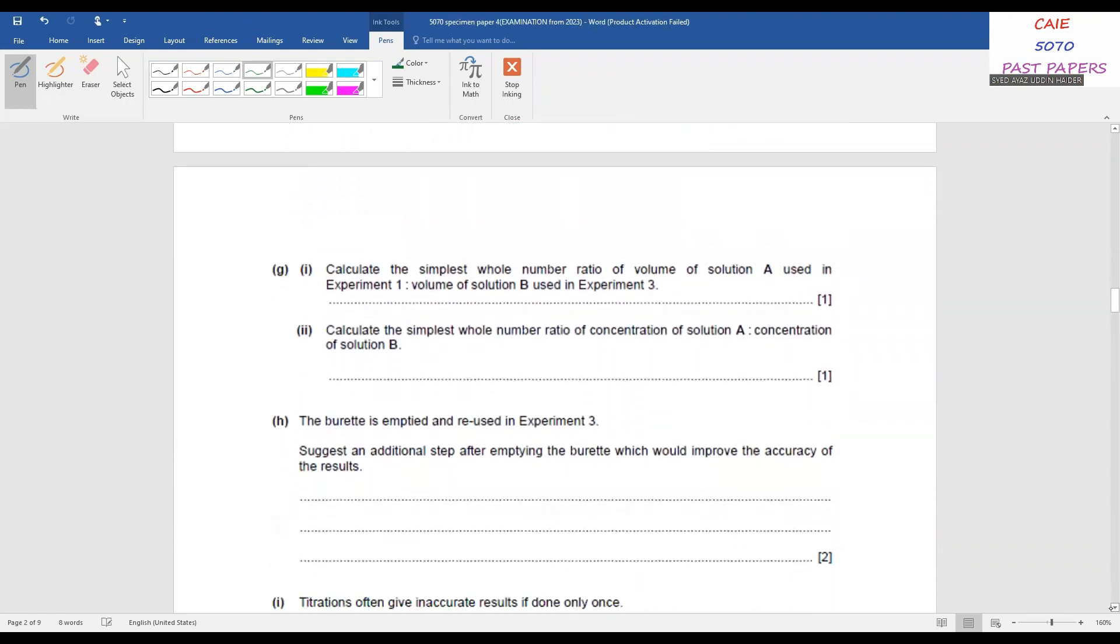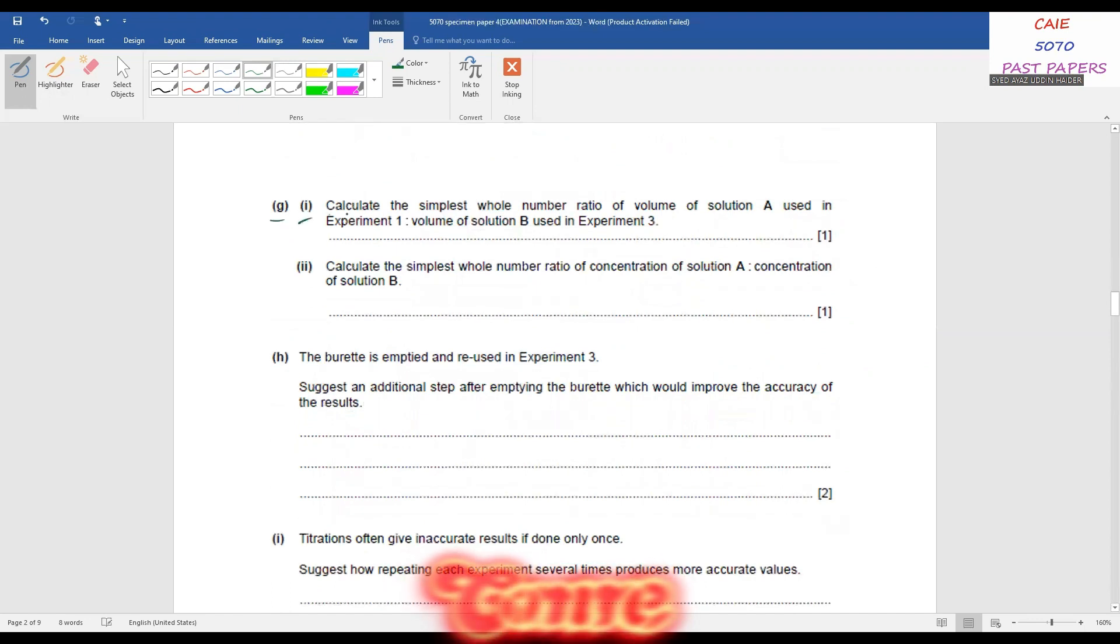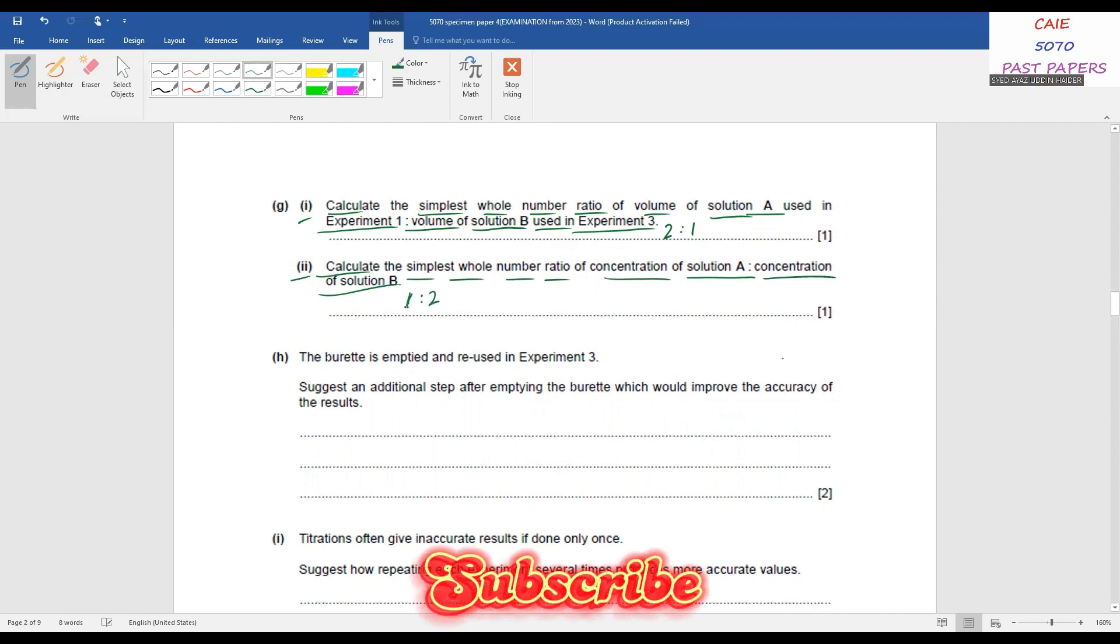Part G(i): Calculate the simplest whole number ratio of volume of solution A used in experiment 1 to volume of solution B used in experiment 3. The answer must be in whole numbers, so it should be 2:1. Part (ii): Calculate the simplest whole number ratio of concentration of solution A to concentration of solution B. It's very easy: 1:2.